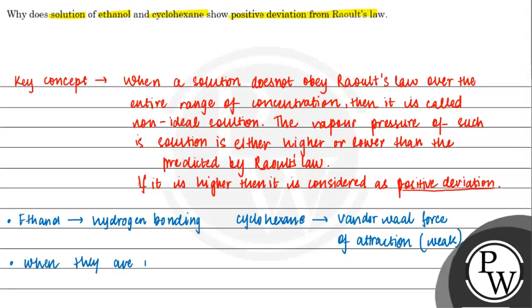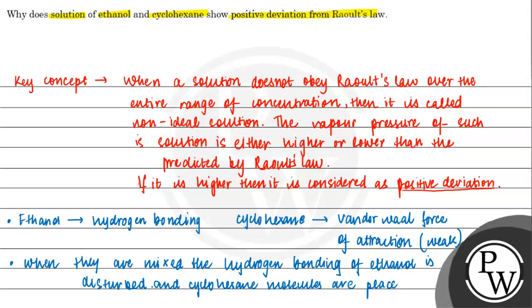So our first point is: when they are mixed, the hydrogen bonding of ethanol is disturbed. When we mix ethanol and cyclohexane, bonding of ethanol is disturbed, and cyclohexane molecules are placed between ethanol molecules.